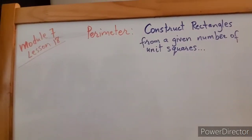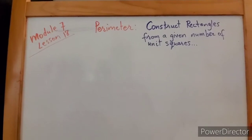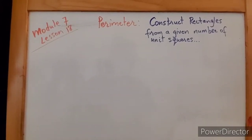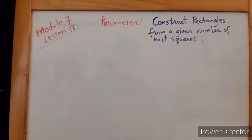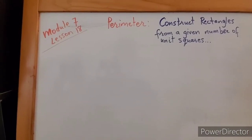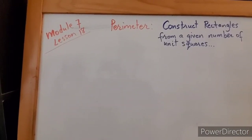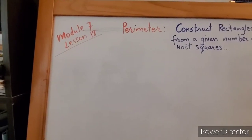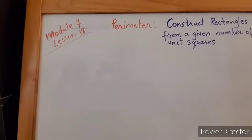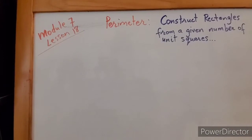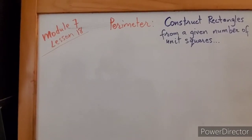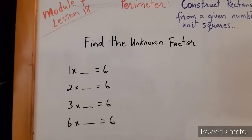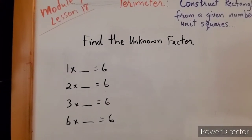Let's get into some warm-up activities before we actually find the perimeter. We're going to look at finding the unknown factor, then we're going to look at drawing a tape diagram, and then we'll get into the practice.